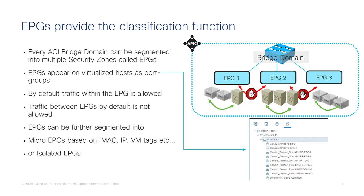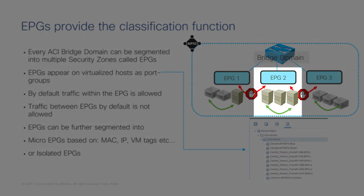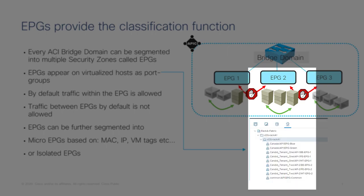As you know, ACI divides workloads into security zones called endpoint groups. Within an endpoint group, hosts can talk, and to communicate between endpoint groups you need to configure the equivalent of ACLs, which are called contracts. EPGs are mapped to virtual servers with port groups, so whenever you have an EPG configured in ACI and associated with a VMM domain, that EPG shows up as a port group where you can attach the host to.